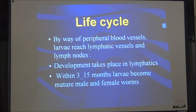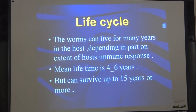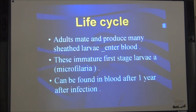By way of the peripheral blood vessels, larvae reach lymphatic vessels and lymph nodes. Development takes place in the lymphatics within 3 to 15 months, and the larvae become mature male and female worms. These female worms can live for many years in the host depending in part on the extent of the host's immune response. The mean lifetime is 4 to 6 years, but they can survive up to 15 years or more. The adults mate and produce sheathed microfilaria larvae which enter the blood, and these immature first stage larvae — microfilaria — can be found in the blood after one year post-infection.